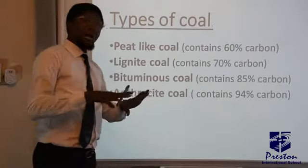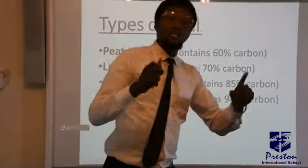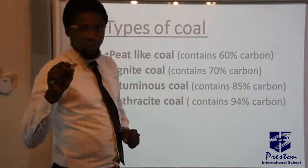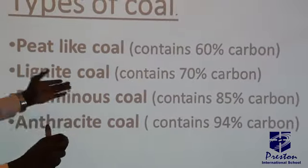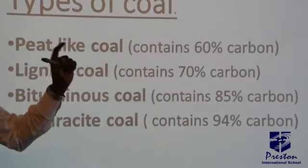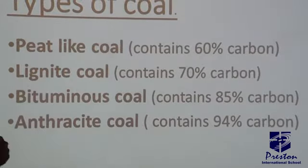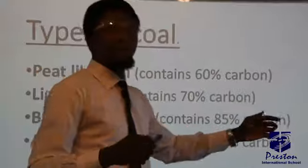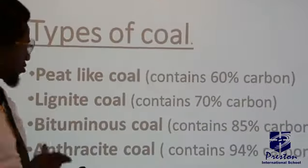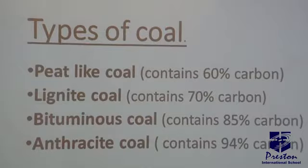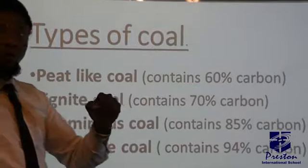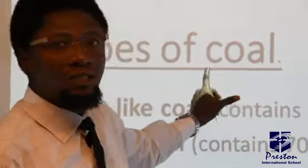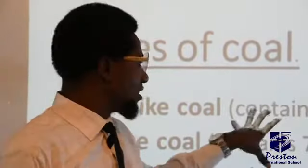There are different types of coal depending on the percentage composition of carbon. The first is peat-like coal, which contains about 60% carbon. The second is lignite coal, containing about 70% carbon. Then we have bituminous coal, which contains about 85% carbon. And lastly, anthracite coal, which contains about 94% carbon. We have discussed coal previously when talking about allotropes of carbon, so we will reference those notes for a deeper understanding.